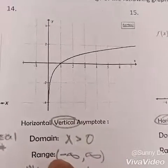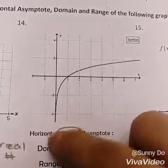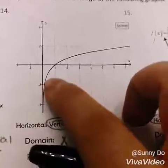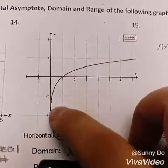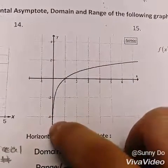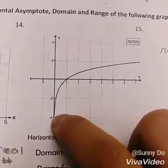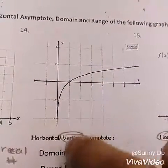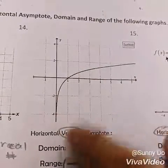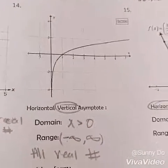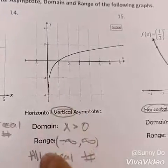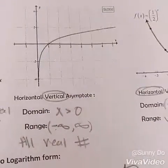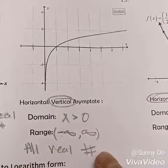For the range, it goes all the way down — negative infinity — to positive infinity. Remember, we have the vertical asymptote, the electric fence that your graph cannot cross to the left. So your range goes from negative infinity to positive infinity, all the way down and all the way up. In other words, it's all real numbers.